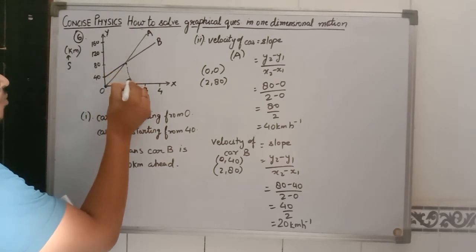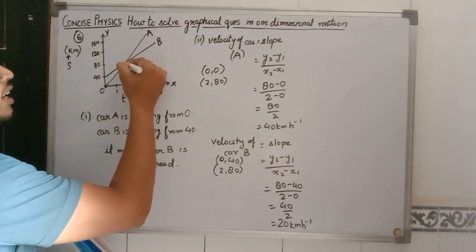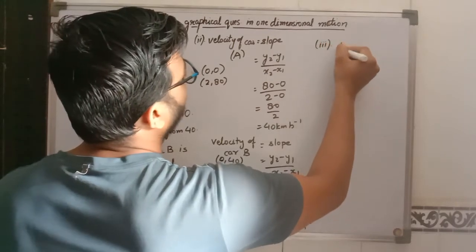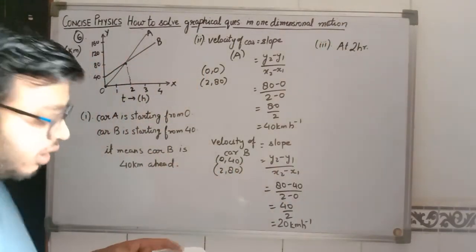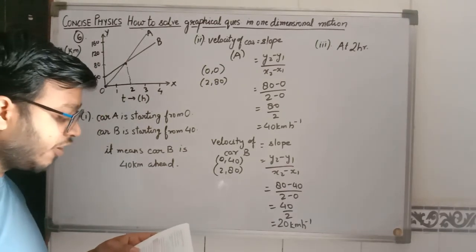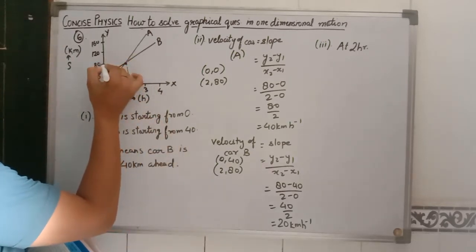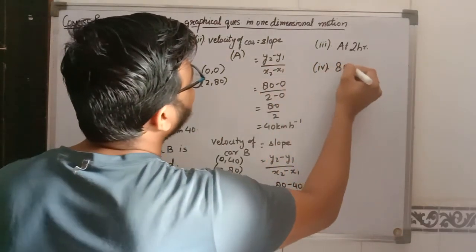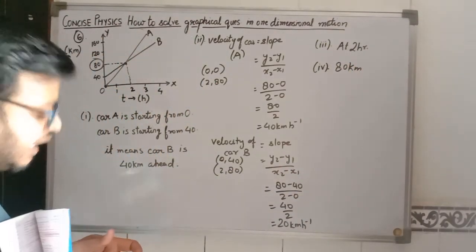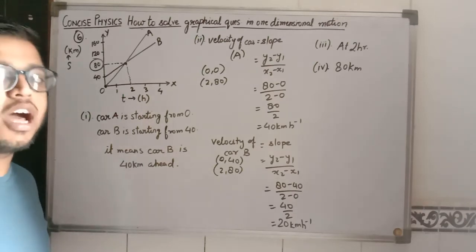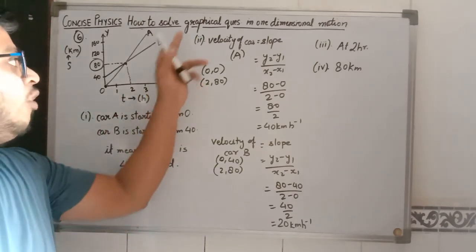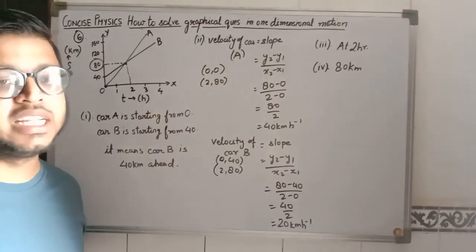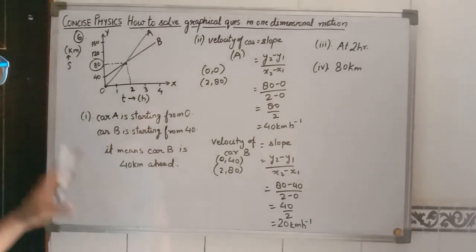In the third part, we need to find when car A catches car B. From the graph, the two lines intersect each other at 2 hours, so car A catches car B at 2 hours. For the fourth part, the distance from the start when car A catches car B: at the intersection point the displacement value is 80 km. So at 80 km from the starting point, car A catches car B. For velocity, we needed to calculate; the first, third, and fourth parts can be answered directly by observing the graph.